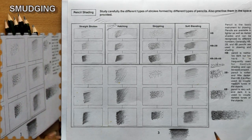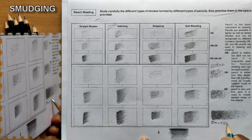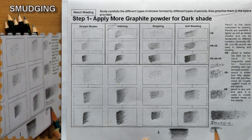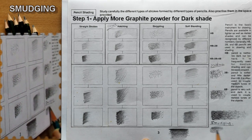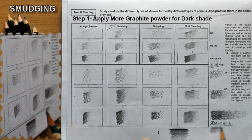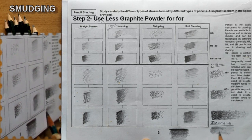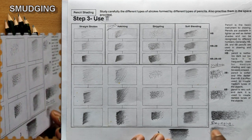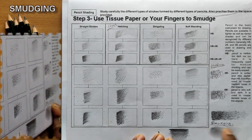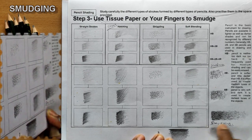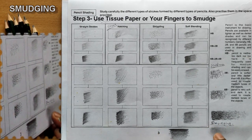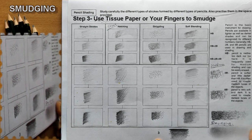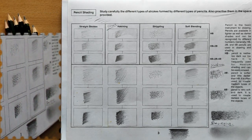There is one more method: smudging. For smudging, where you want a darker shade apply it darkly — you can use pencil powder as well. Use more powder to smudge with your thumb or a tissue paper, moving towards the lighter side to make it lighter. Add more powder or graphite for a darker shade. Use very little powder when you want a lighter shade.